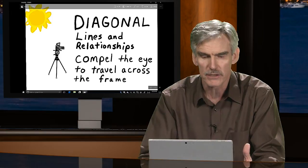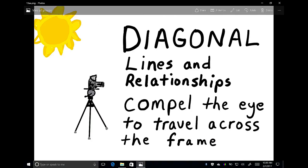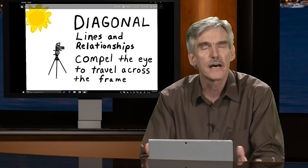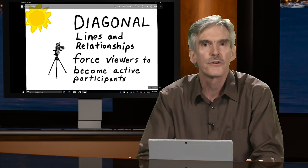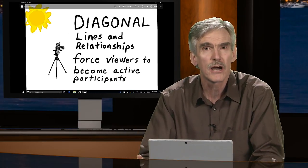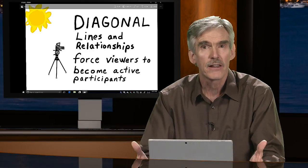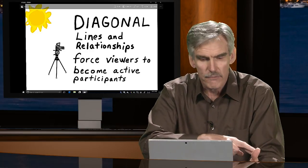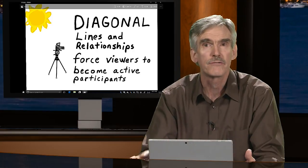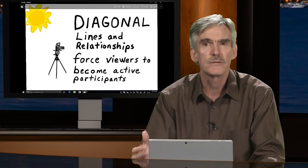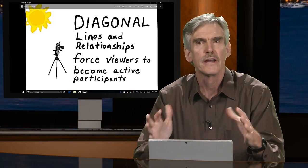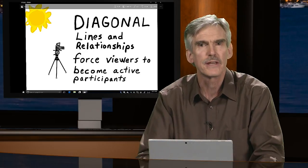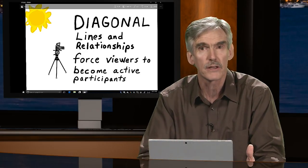Diagonal lines and relationships compel the eye to travel across the frame — that's the beauty of diagonal lines. It forces the viewer to become an active participant in the photography, so they're more engaged. They have to analyze the photo, follow that diagonal line all the way across the frame and see where it leads, and make judgments about the relationships in that image when you're utilizing those diagonal lines.